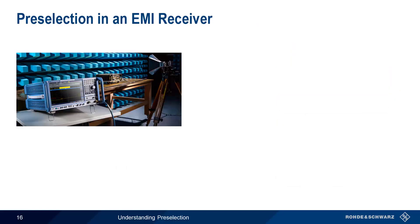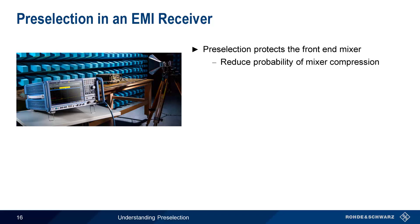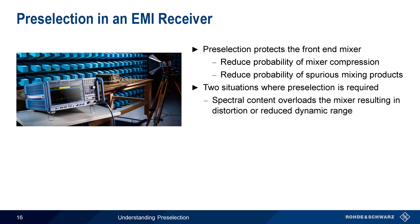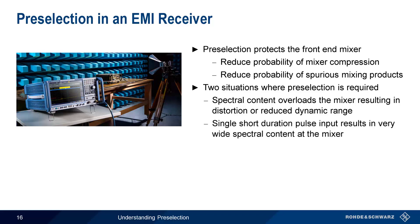Before talking about standards compliance, let's talk a little more about the role of preselection in an EMI receiver. The main purpose of preselection is to protect the front end, or the first mixer, of our instrument — to reduce the probability of mixer compression, as well as the probability of spurious mixing products being generated. This happens primarily in two situations. The first is spectrum content or power at frequencies other than our current measurement frequency, which creates an overload situation leading to distortion, amplitude inaccuracies, or a reduced dynamic range. The other situation is related to CISPR 16-1-1 and involves a single, short-duration pulse, which results in very wide spectral content at the mixer.